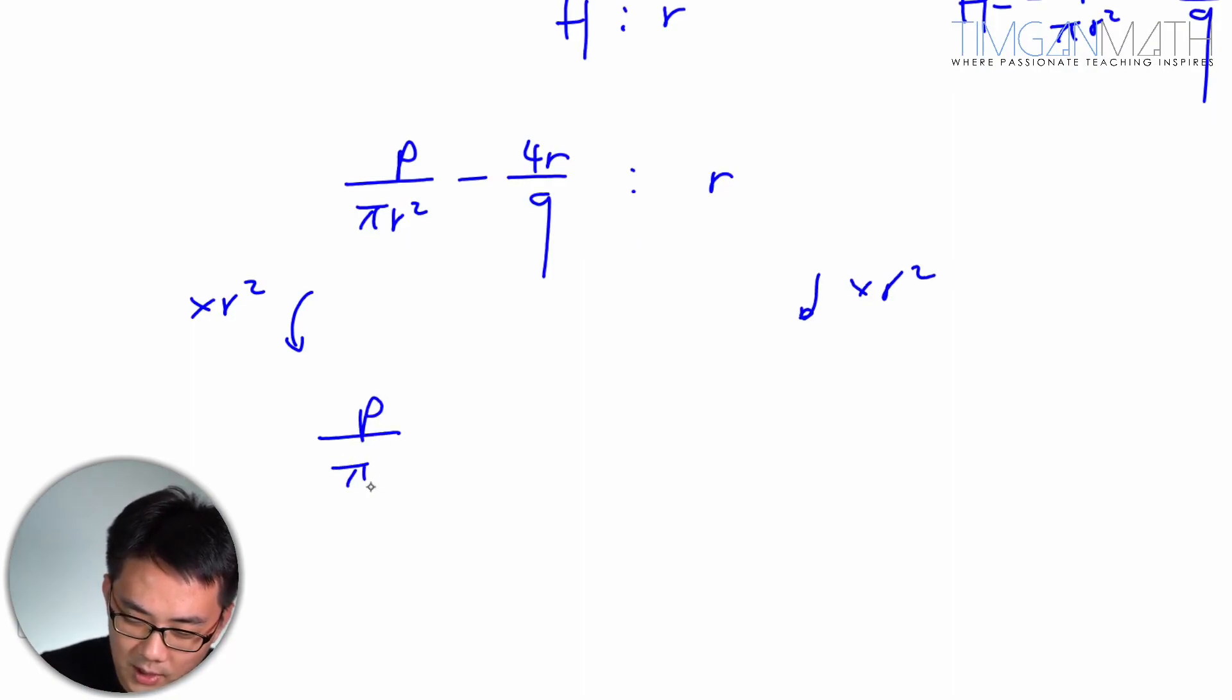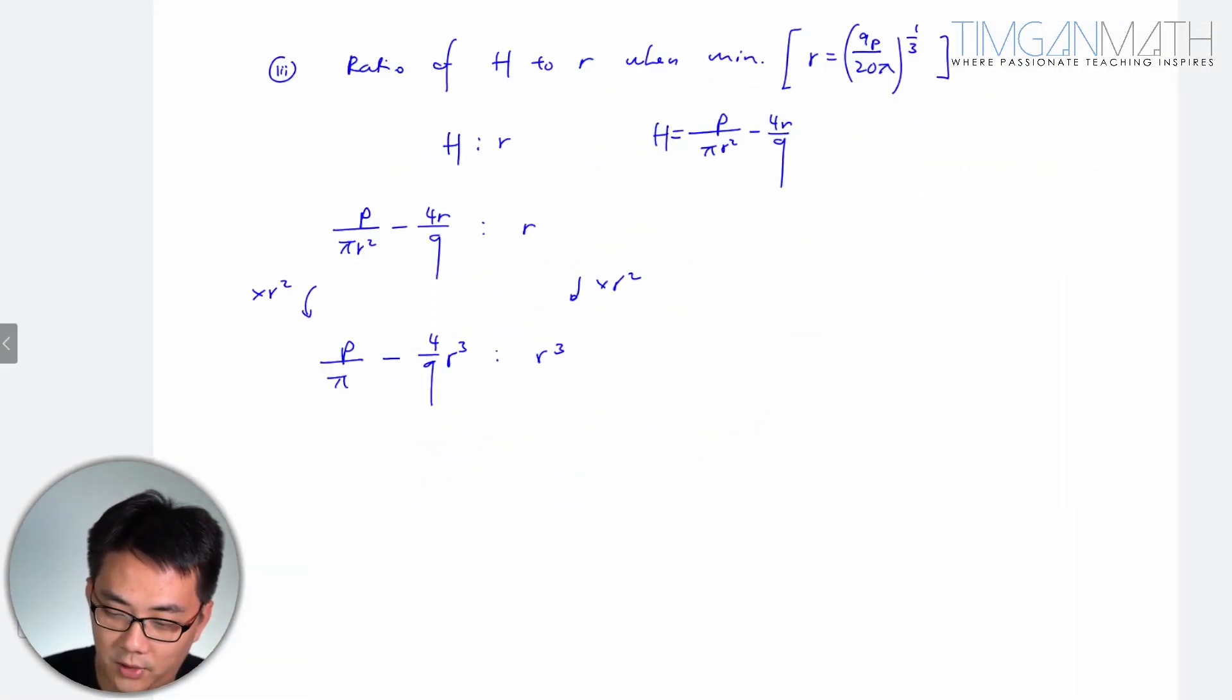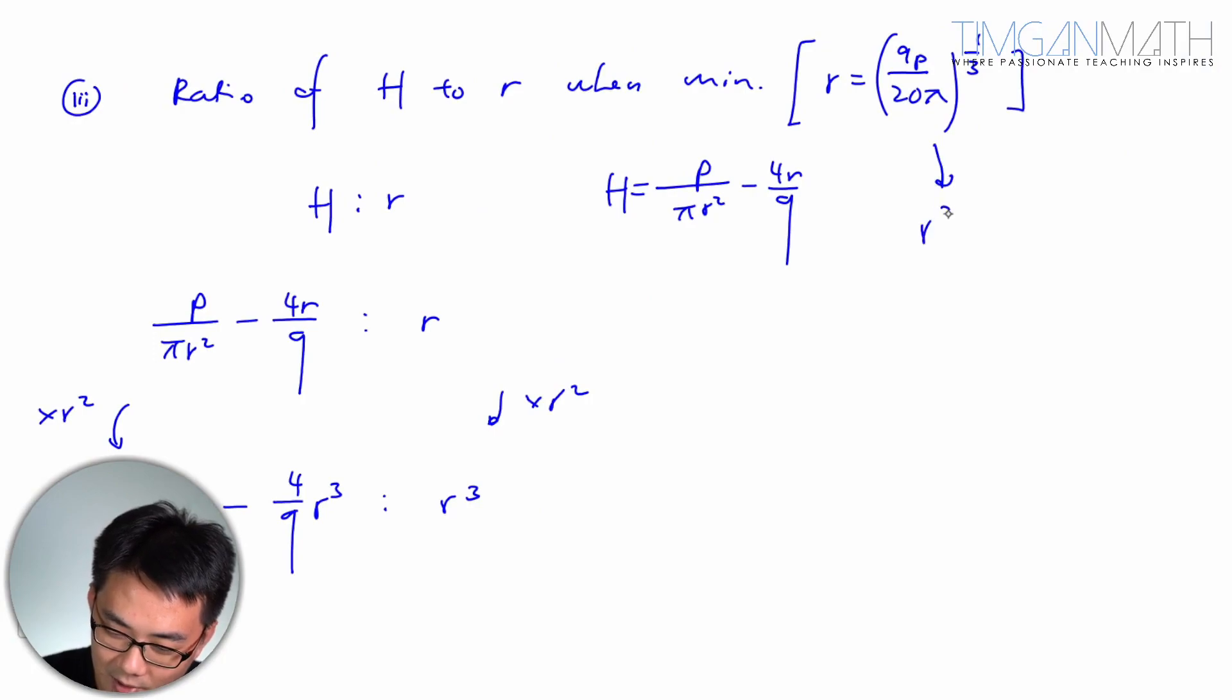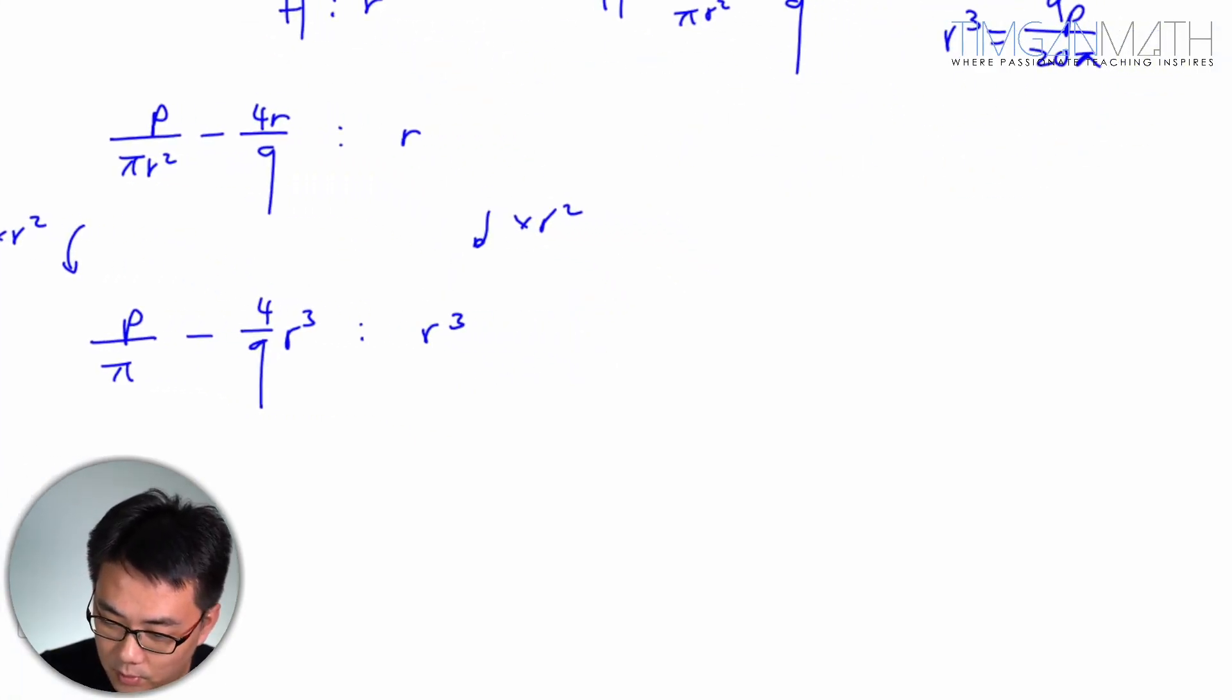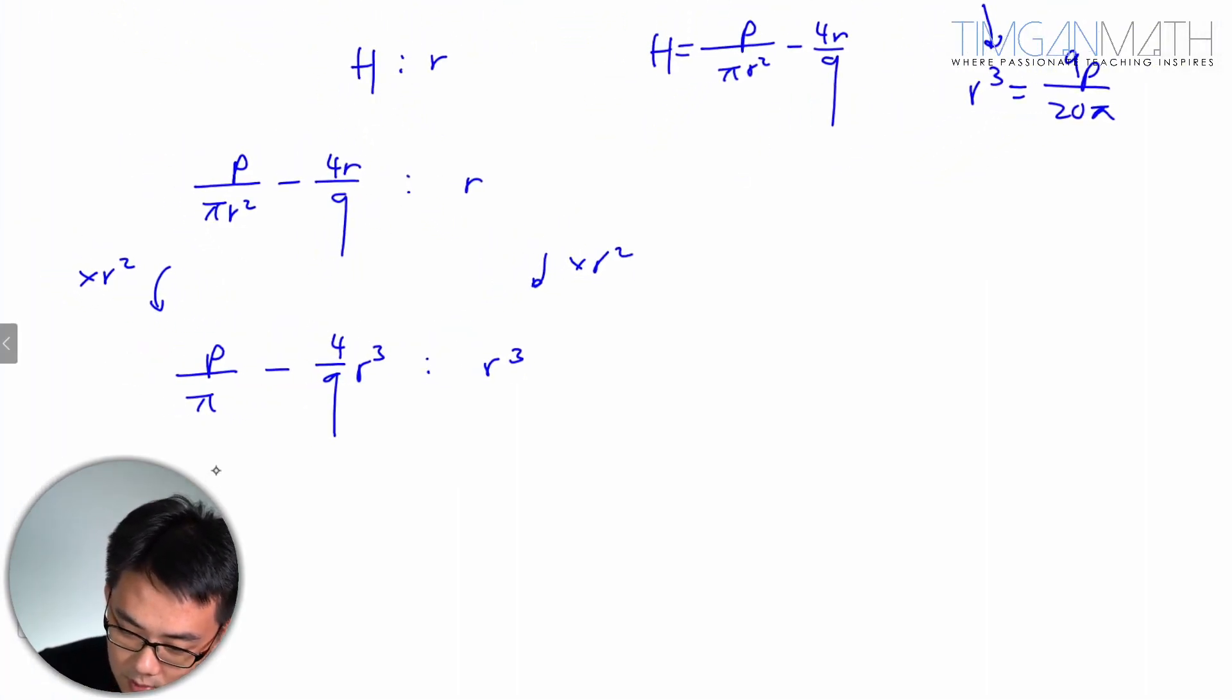So R squared H, this will be P over pi minus 4 over 9 pi R cubed. Now, why do I put R cubed? Because I know that R cubed is 9P over 20 pi. So this is a matter of manipulation. You don't get H into this weird form, so I'm going to multiply by R cubed both sides. So I get R cubed is equal to, this is pi, this is much better. This is 9 over P over 20 pi. This is also 9 over P over 20 pi. Then you substitute this in.